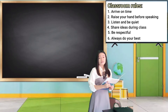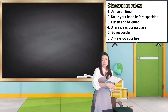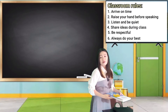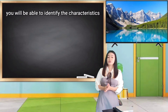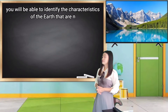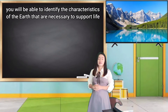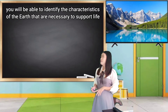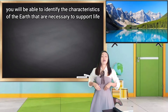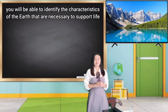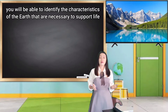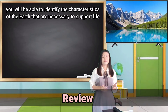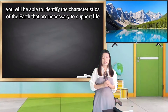So, what is our objective for today? At the end of our class, we will be able to identify the characteristics of the Earth that are necessary to support life. Before we start our lesson for today, let me see if you can still remember the order of the planets according to distance from the sun in our solar system.